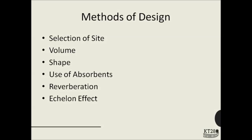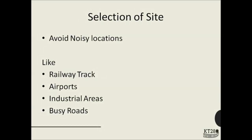These are some methods of design of an auditorium. We will look at these points one by one. The first point to consider is selection of site. If your site is located near a noisy location, then noise from the surroundings may cause disturbance inside the hall.